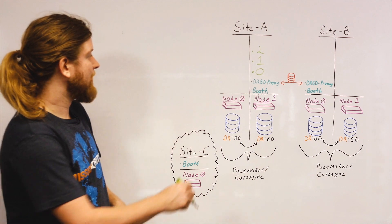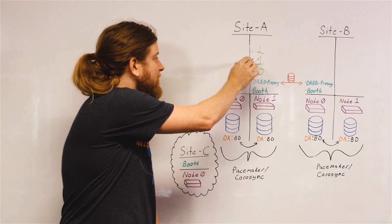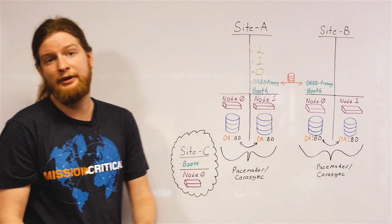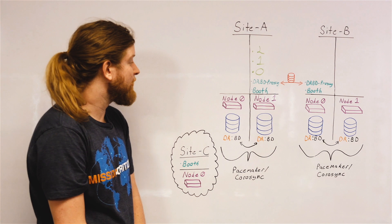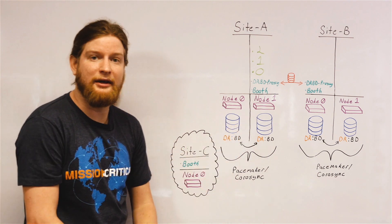So take for example these applications 0, 1, and 2, running on a local high availability cluster replicated by DRBD.